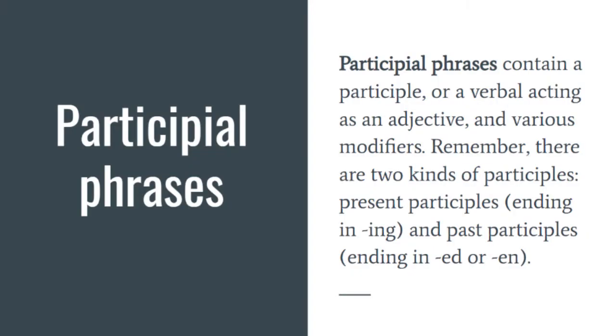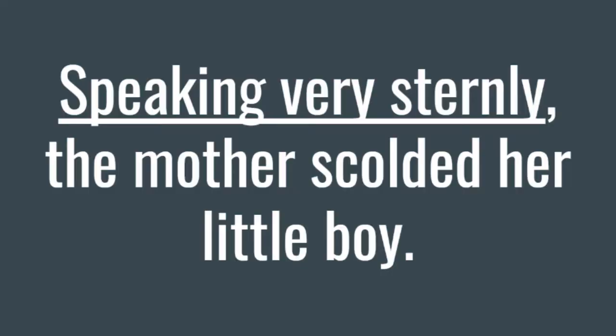Finally, we can find participle phrases. Participle phrases contain a participle — a verbal acting as an adjective — and various modifiers. Remember, there are two kinds of participles: present participles, ending in -ING, and past participles, ending in -ED or -EN. For example: 'Speaking very sternly, the mother scolded her little boy.' So, for today's class, and to illustrate the grammar principles I mentioned at the beginning, we will focus on the first kind of verbal phrases: gerund phrases.